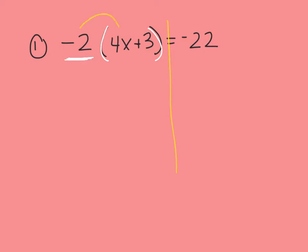So I have negative 2 times 4x and that gives me negative 8x, plus negative 2 times 3, and that is going to give us negative 6. All of that is still equal to negative 22.